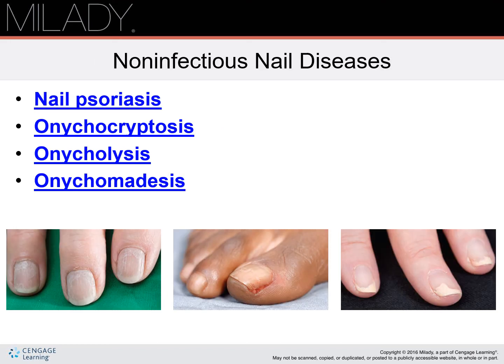Now we're going to move along to non-infectious nail diseases. Nail psoriasis is a non-infectious condition that affects the surface of the natural nail plate, causing tiny pits or severe roughness on the surface. Onychocryptosis, also known as ingrown nails, can affect either the fingers or toes. In this condition, the nail grows into the sides of the living tissue around the nail. Onycholysis is the lifting of the nail plate from the bed without shedding, usually beginning at the free edge and continuing towards the lunula area. This is usually the result of physical injury, trauma, or allergic reaction of the nail bed, and less often related to health disorders.